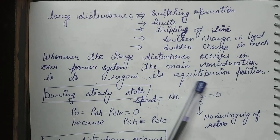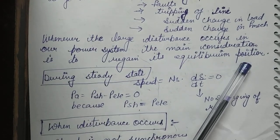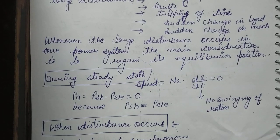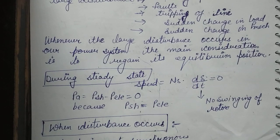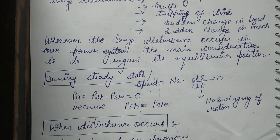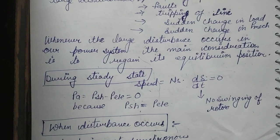Whenever a large disturbance occurs in our power system, the main consideration is to regain its equilibrium position. Transient state stability study is very important because at that time our power system has a high chance of attaining instability — a high chance of loss of synchronism. In steady state stability, we always talk about smaller disturbances where the rotor angle varies only 2 to 3 degrees. But with large disturbances, the variation in rotor angle is much greater.